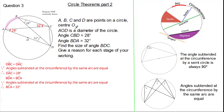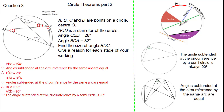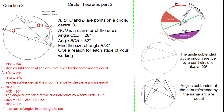Now let's see if we can use the diameter. You might be able to spot our other circle theorem. Given the fact that we have a diameter, we can identify angle ACD is 90 degrees, because the angle subtended at the circumference by a semicircle is 90 degrees. Given we needed to find angle BDC, you might be able to see our triangle. So we simply do 180 subtract 28 subtract 32 subtract 90, which gives us a final answer for angle BDC of 30 degrees, because the sum of angles in a triangle is 180 degrees.